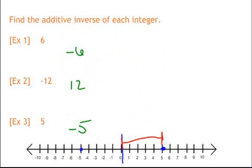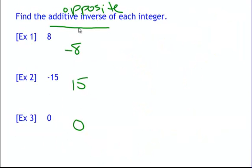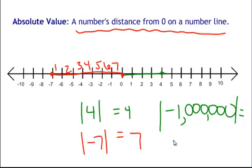Let's recap. Integers are the set of whole numbers and their opposites, like 8 and negative 8. They cannot be decimals or fractions — they have to be whole numbers, both positive and negative. Additive inverse is simply the opposite: 8 and negative 8, negative 15 and 15, positive 26 and negative 26. Absolute value is how far a number is from 0 on the number line — the absolute value of negative 1 million is just 1 million, because it's 1 million spaces away from 0. I will see you in class.